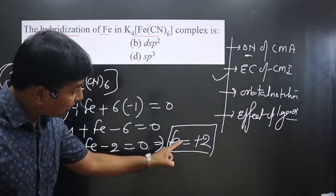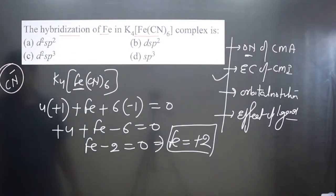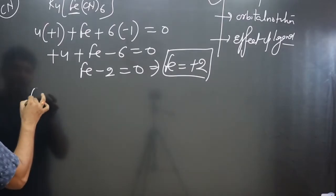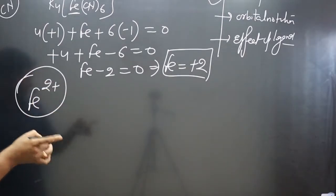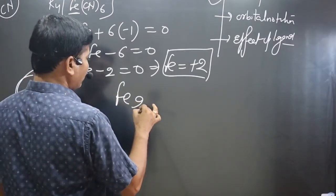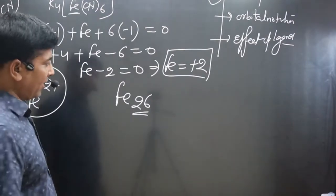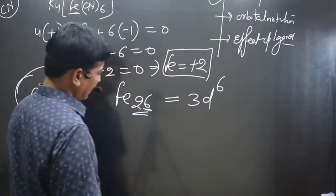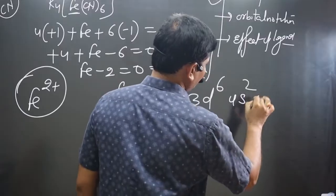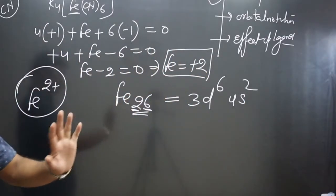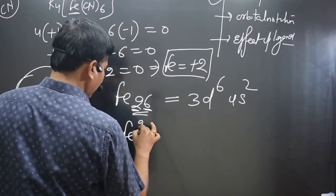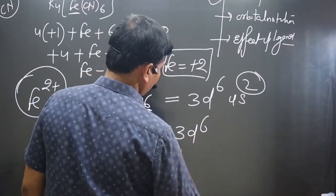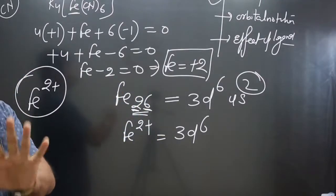Now we move on to the second step: write the electronic configuration of the central metal ion. The central metal atom is in +2 oxidation state. The atomic number of iron is 26. The outermost electronic configuration is 3d6, 4s2. For Fe2+, which loses 2 electrons, the configuration becomes 3d6.